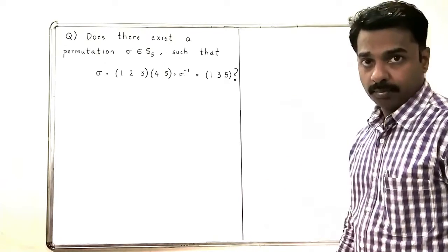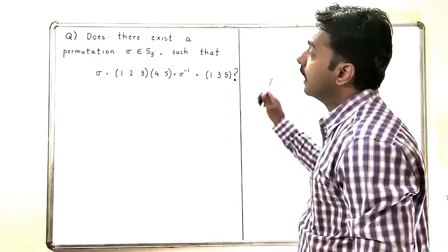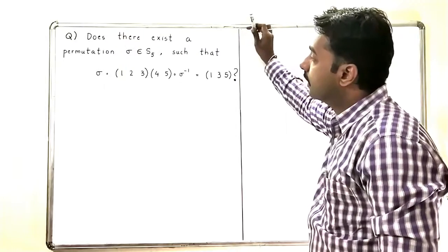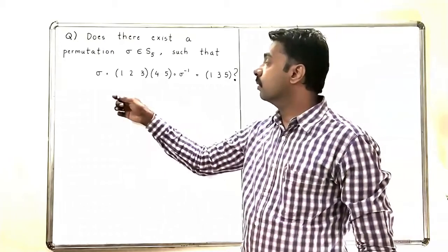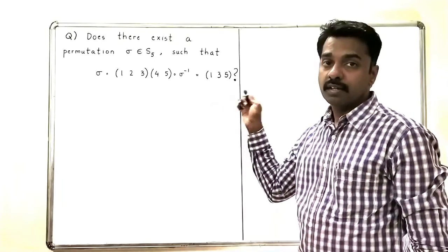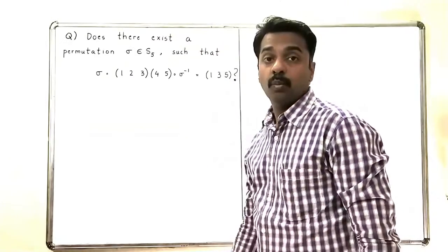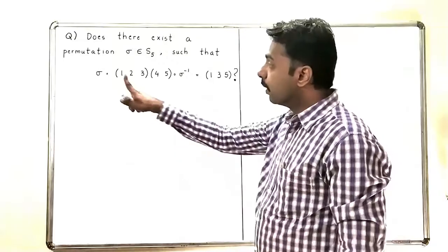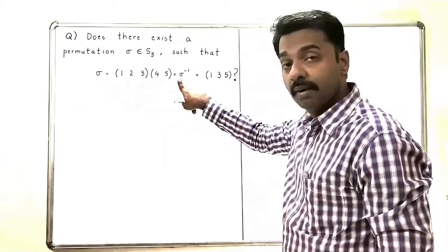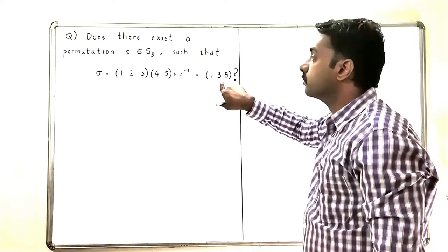Let us look at this problem from permutation groups. We want to check whether there exists a permutation σ in S₅ such that σ composed with the permutation (1 2 3 4 5) composed with σ⁻¹ gives (1 3 5). To find such a permutation, we know that S₅ contains 120 elements. So which permutation σ should we choose so that σ∘(1 2 3 4 5)∘σ⁻¹ exactly gives the cycle (1 3 5)?